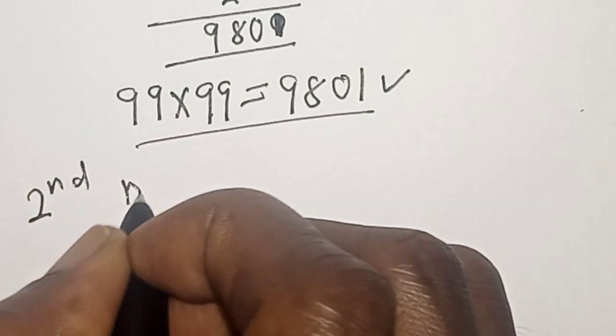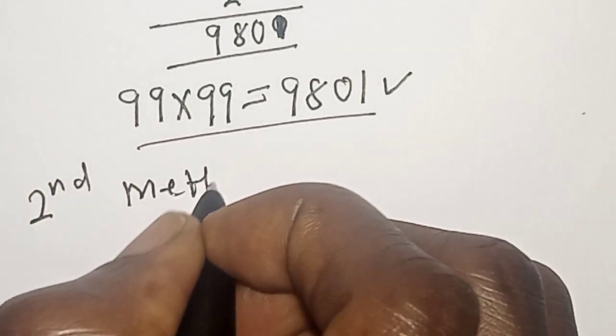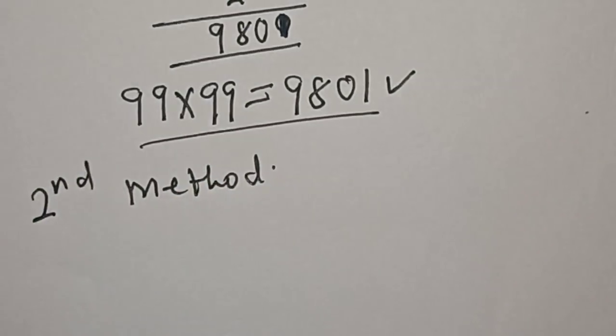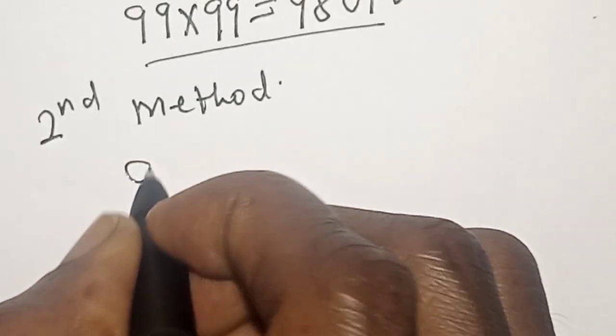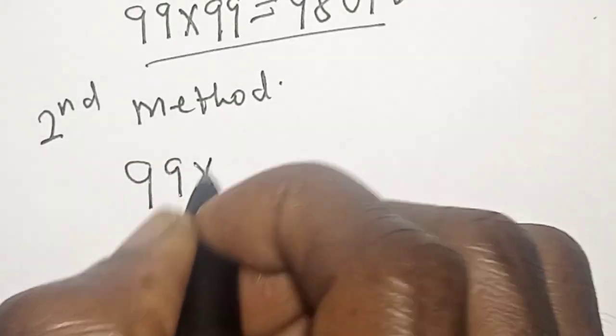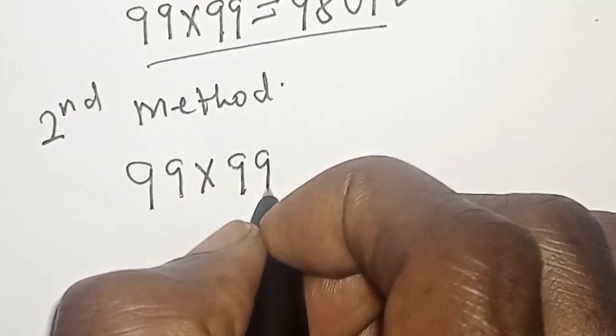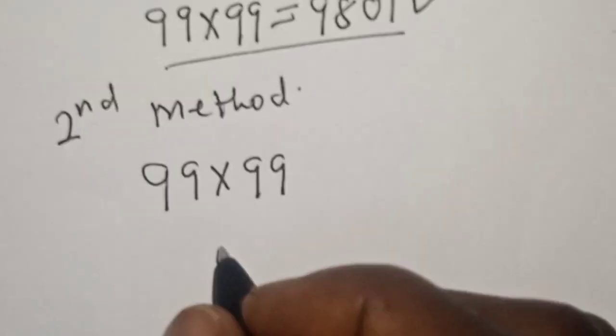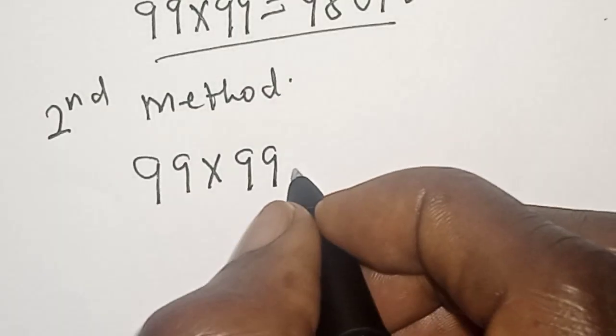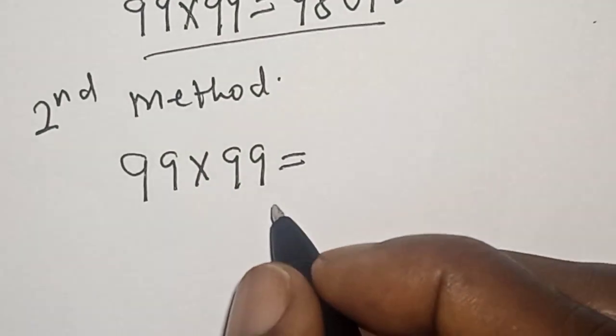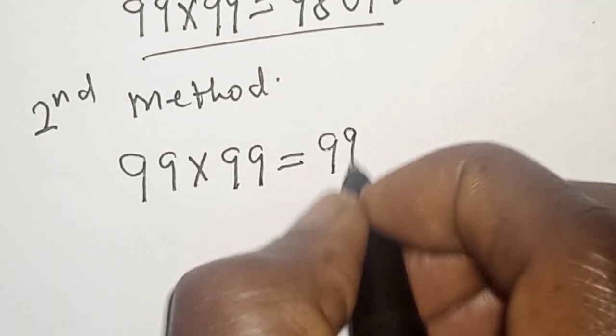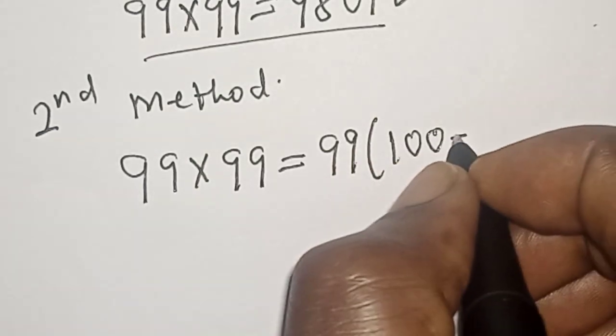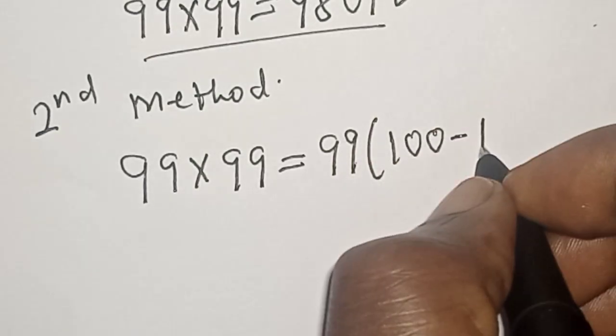Second method. Now we have 99 multiply by 99. Then this is equal to 99 into (100 - 1).